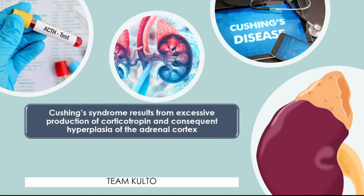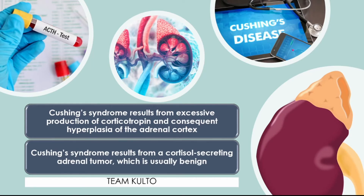The causes of Cushing's syndrome include the following: in approximately 70% of patients, Cushing's syndrome results from excessive production of corticotropin and consequent hyperplasia of the adrenal cortex — remember, the adrenal gland is located on top of your kidneys and is responsible for releasing cortisol. In the remaining 30% of patients, Cushing's syndrome results from a cortisol-secreting adrenal tumor, which is usually benign.